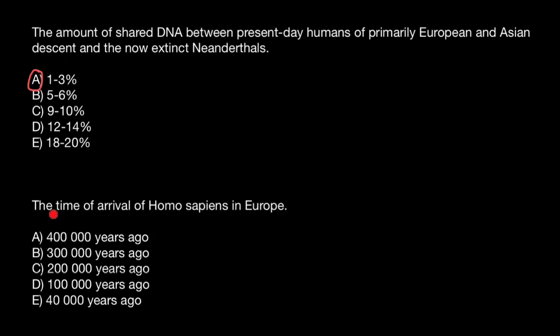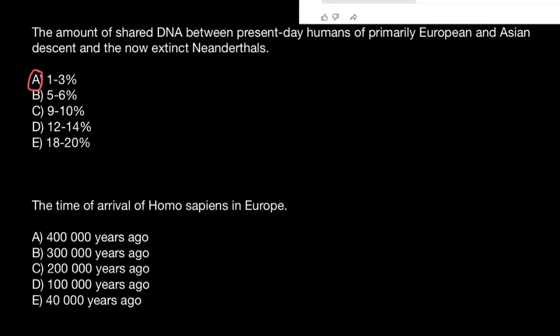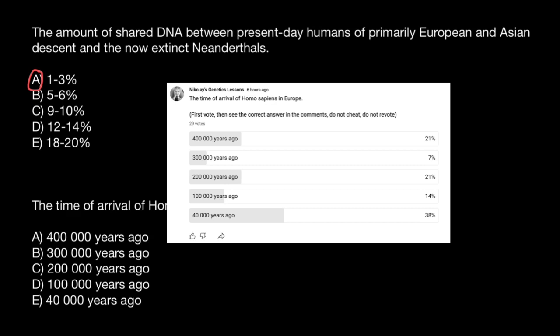The second question is about the time of arrival of Homo sapiens in Europe. Here are the answer choices. Take a look at how students answered this question, which was posted just a few hours ago — about six hours ago — and we have here the whole range of different numbers.